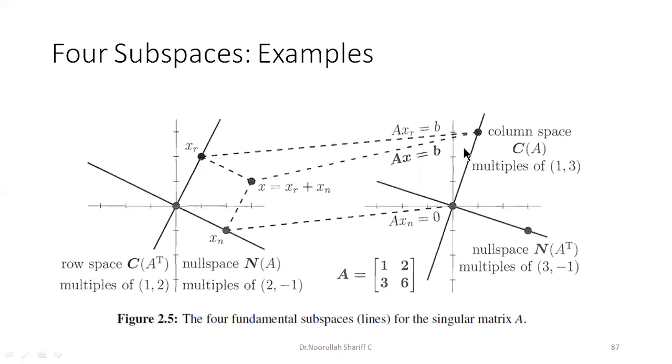Out of this, AXn is equal to already 0, we know that, to find the null space, we use AXn equal to 0. So leave that, you'll get AXr equal to B. Okay, so using this Xr, Xr can be mapped into the B by multiplying it by A. Okay, multiplying it by A.